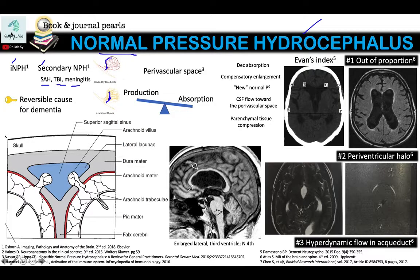Blood products in the CSF can also block the arachnoid granulations. It's important to make this diagnosis because patients with normal pressure hydrocephalus can undergo shunting, and their symptoms or dementia may potentially be reversed.